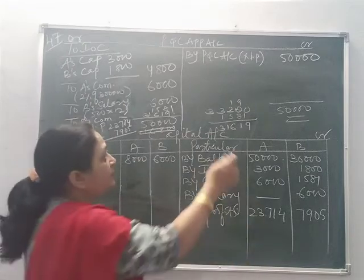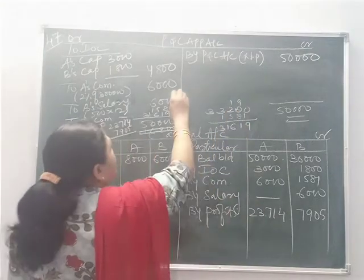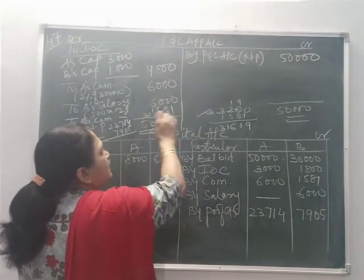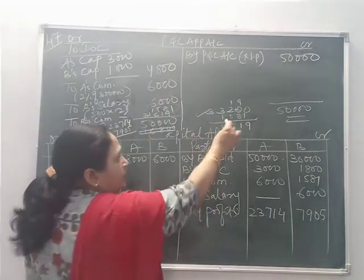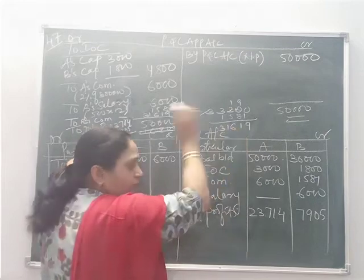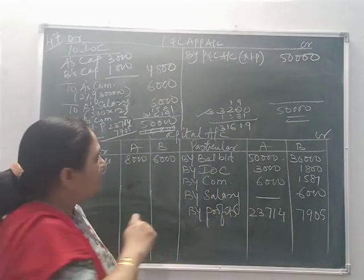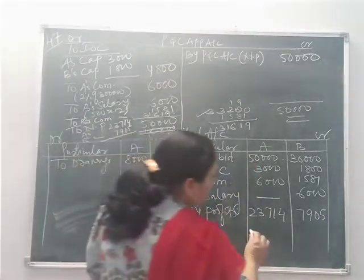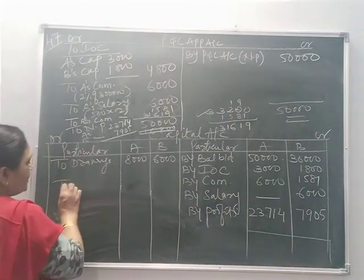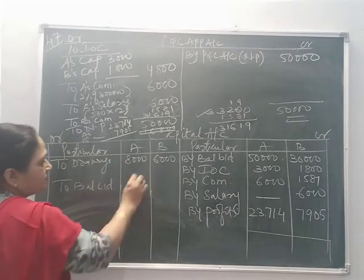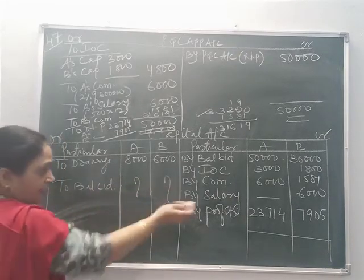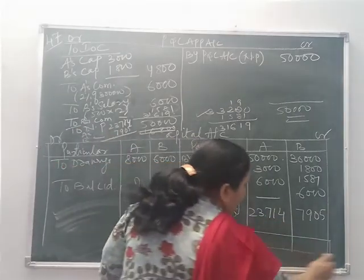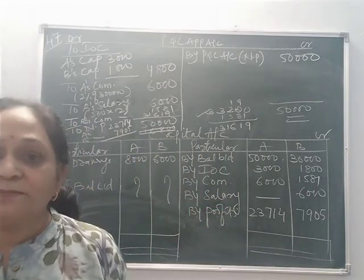Don't worry about how the figures are derived — once the three items are subtracted you get that divisible profit figure, from which B's commission is further subtracted. The remaining is the divisible profits distributed among partners in 3:1. After totalling both sides of the capital accounts, calculate the balance carried down — it will be a credit balance for both accounts. Close both sides and find the closing balances on your own.